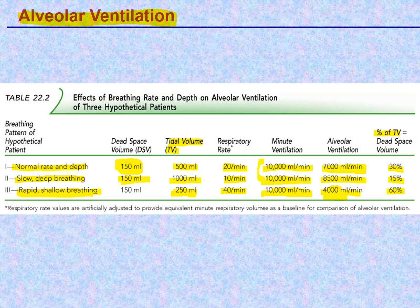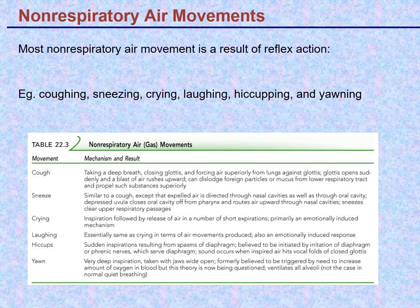People who start running and breathe too fast are told to breathe slower and deeper — rapid shallow breathing tires you out and doesn't ventilate the lungs as well as slow deep breathing. Non-respiratory air movements — coughing, sneezing, gasping, huffing, puffing — are typically the result of reflexes.